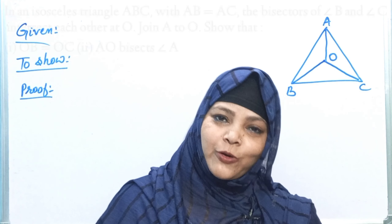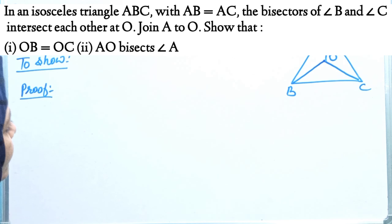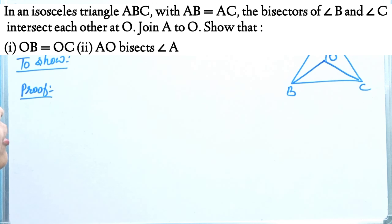Let's read the question. Question number 1: In the isosceles triangle ABC with AB equals to AC, the bisectors of angle B and angle C intersect each other at O. Join A to O. Show that OB equals to OC, and second, show that AO bisects angle A.